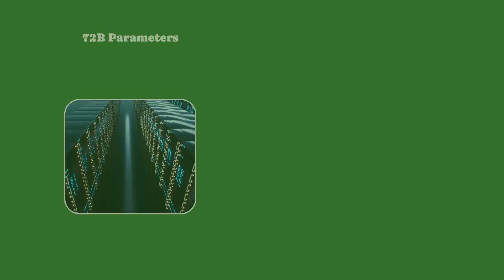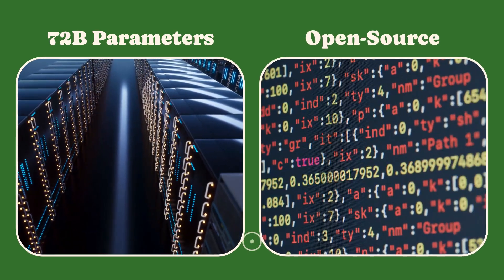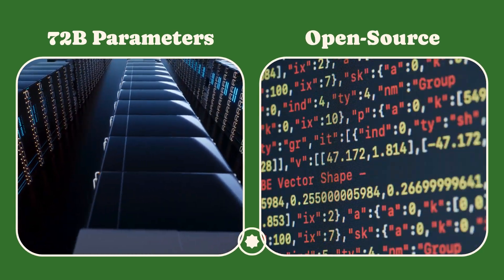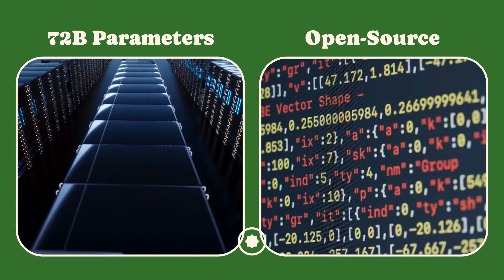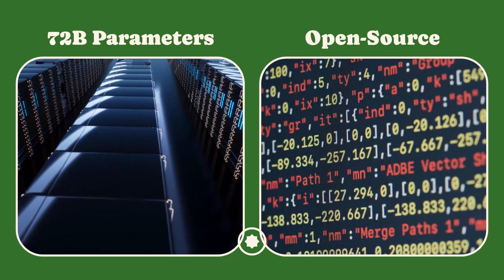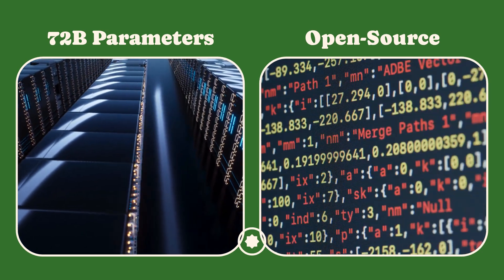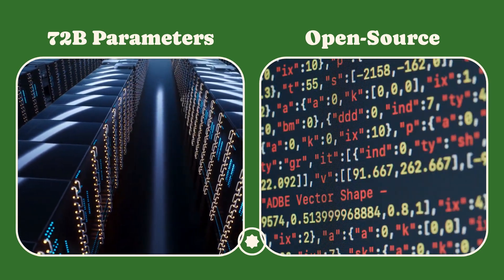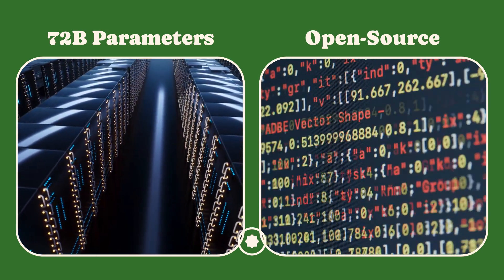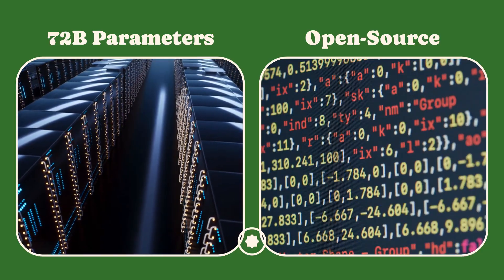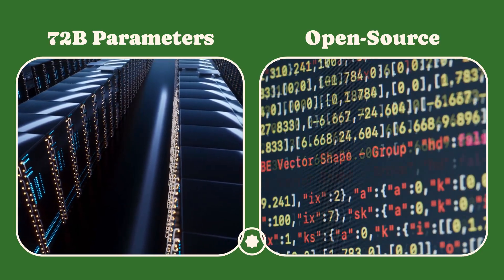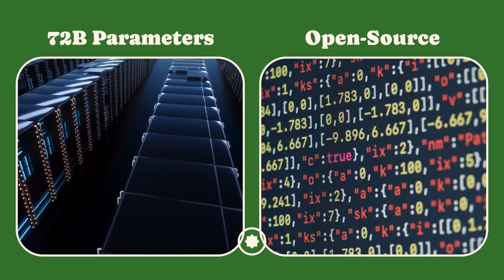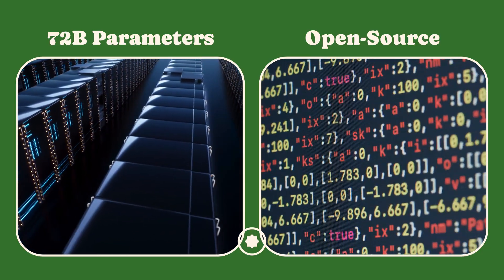The models are open weights, meaning their architecture and parameters are publicly accessible. They are available in 3B, 7B, and a new larger 72B parameter size on Hugging Face, allowing developers to choose a model that balances accuracy and computational resource needs.